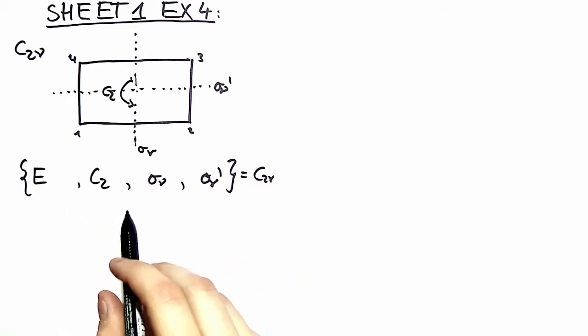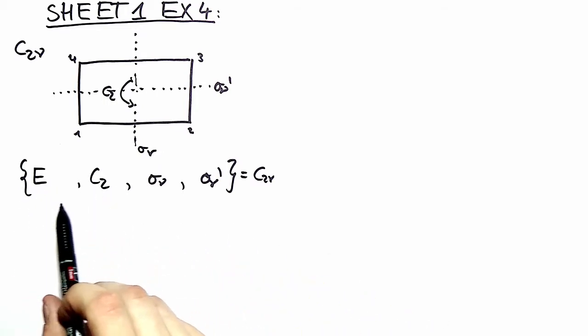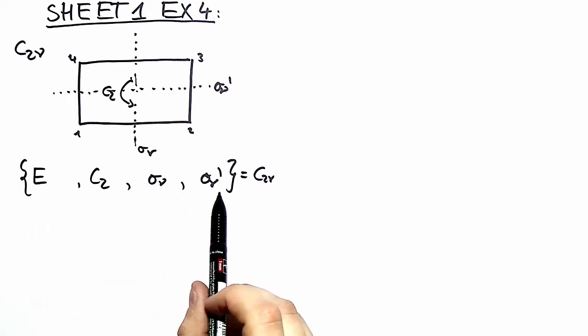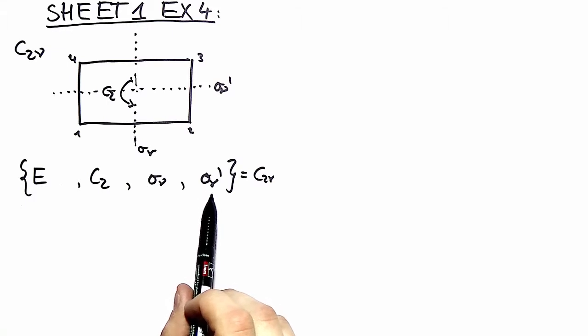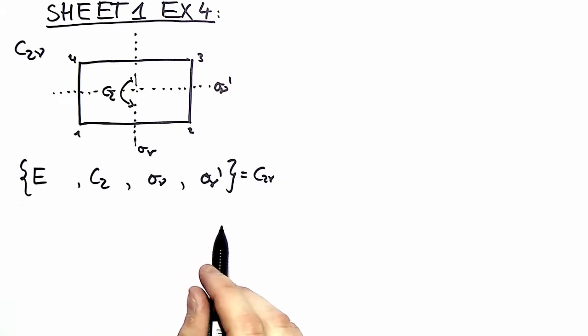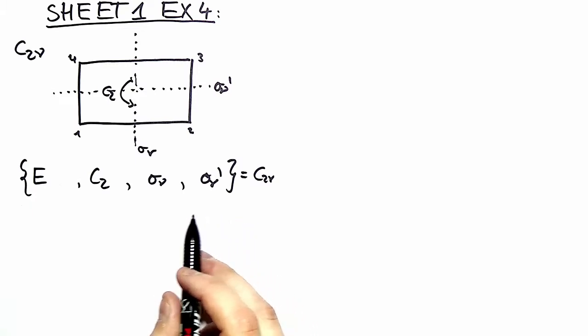In the first part we want to find a notation for the symmetry elements just the same as in exercise 2. For finding the corresponding symmetry operations in the OH group this time we take a different approach.